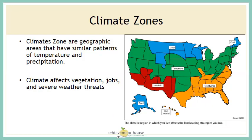The last physical map we're going to look at is climate zones. Climate zones are geographic areas that have similar patterns of temperature and precipitation — precipitation means rainfall. The climate affects what vegetation, jobs, and severe weather threats affect an area. Before you plant something, you want to know what climate zone you live in, so you understand which plants, crops, and trees will thrive in that area.